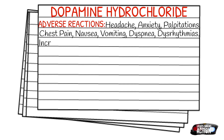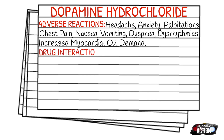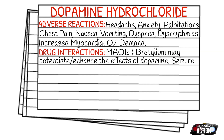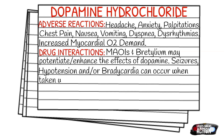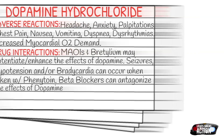Dopamine can have some drug interactions. MAOIs and bretylium may potentiate or enhance the effects of dopamine. Seizures, hypertension, and/or bradycardia can occur when taken with phenytoin. Beta blockers can antagonize the effects of dopamine.